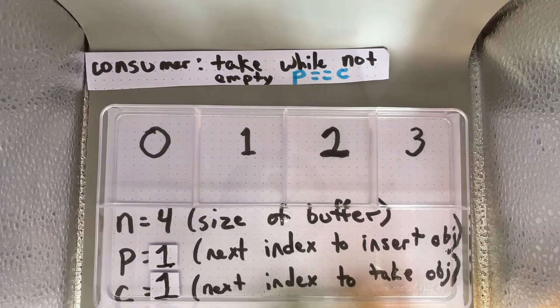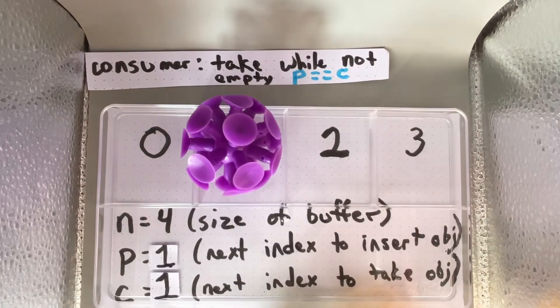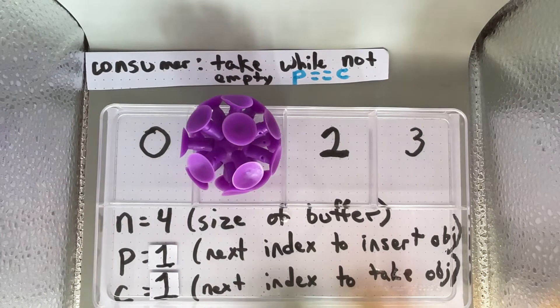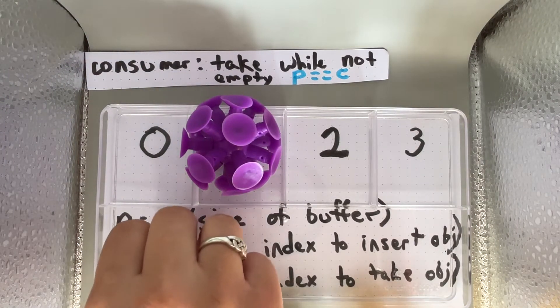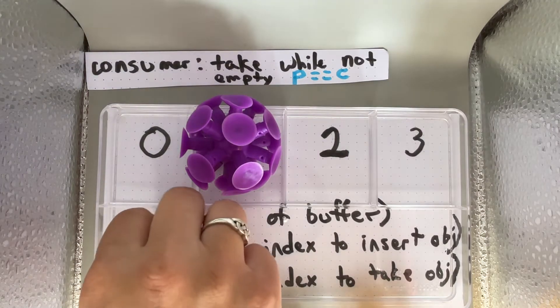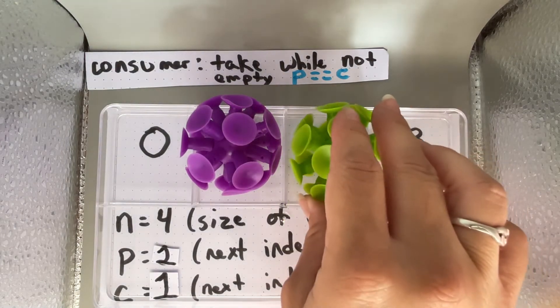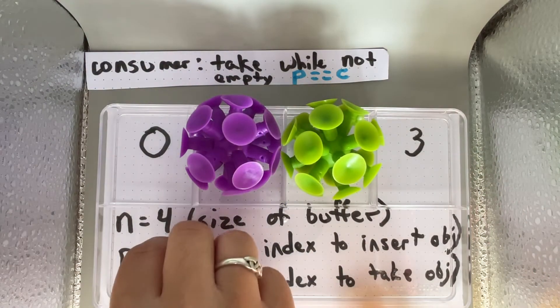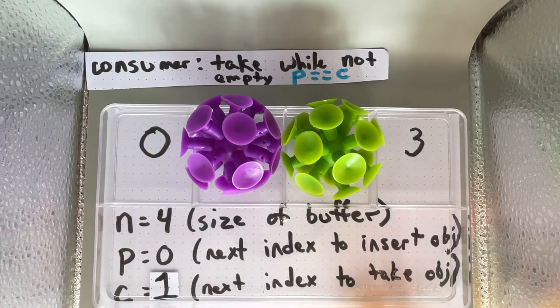The producer will go ahead and put the next object into index 1. When the producer puts an object into index 1, they are now at index 2. When the producer puts something in index 2, they are instead at index 3.